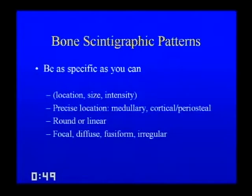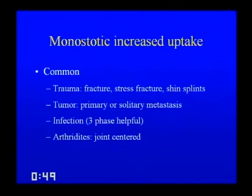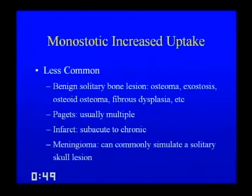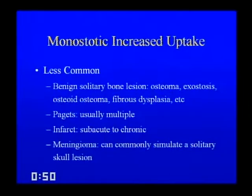Monostatic increased activity common causes include: trauma — true fracture, stress fracture, shin splints; tumors — primary or solitary metastases; infection; and arthritis, which is joint-centered and usually not malignant. Less common causes include any benign solitary bone lesion — osteoma, exostosis, osteoid osteoma, enchondroma, fibrous dysplasia — as well as Paget's disease, which can start as a solitary finding, and bone infarcts in the subacute to chronic phase. Anything causing sclerosis on plain film will generally be hot on bone scan.